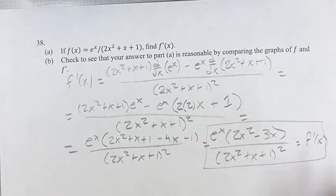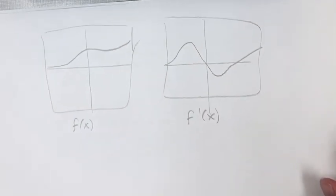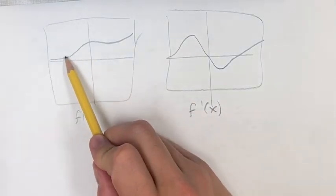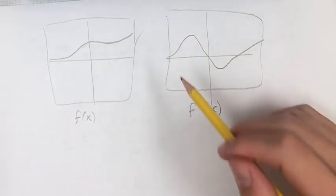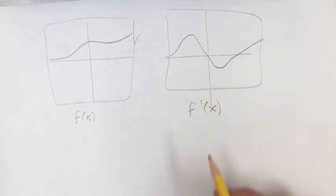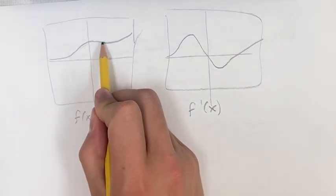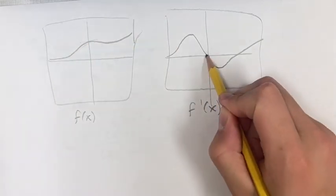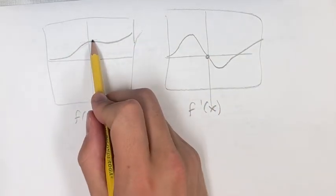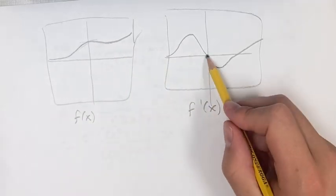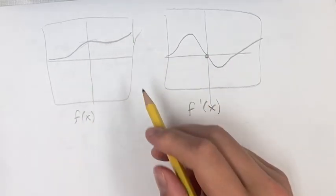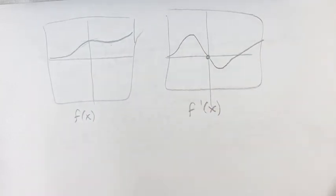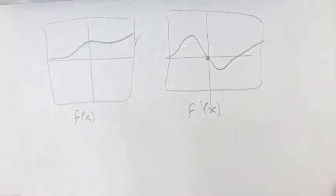In comparing the graphs of the derivative to the original function, you'll notice that while the function is increasing, the value of the derivative is positive. And when it goes from increasing to decreasing, and the slope, you can think of it as 0, then the value of the derivative is 0. Then it's decreasing a little bit right here, so the value is negative, and it goes back up to increasing, which means it's positive. But before we do that, we hit 0. So that's how you compare the graph of the function to the graph of the derivative.